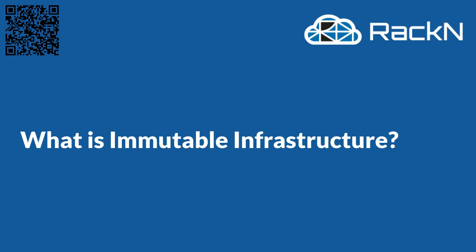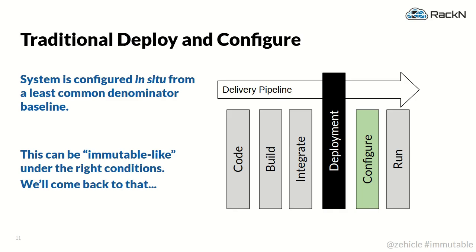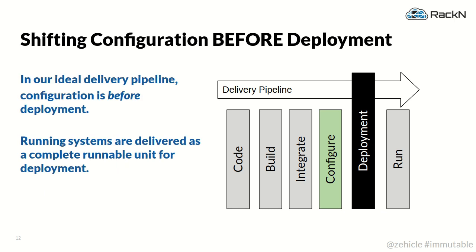That brings us to immutable infrastructure. Think of it as pre-deploy configured. We're not trying to make things permanently unchanged — what we're really trying to do is say: let's do our configuration before deployment. That might sound crazy if you're used to traditional deployments, where the configure step is done after you deploy a system. You do a whole bunch of configuration and then you can run it.